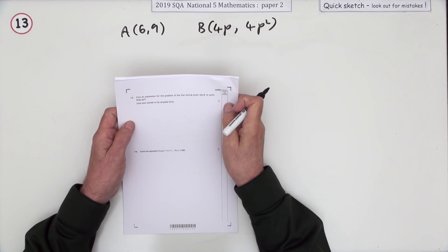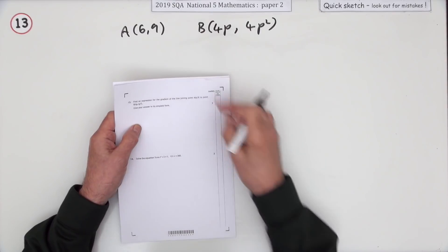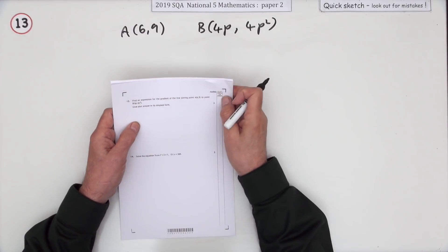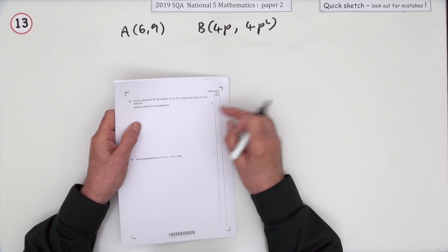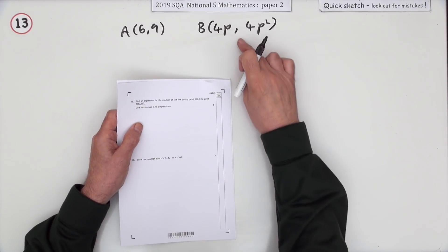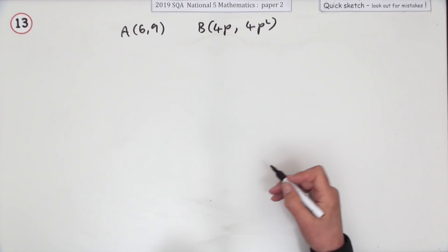Number 13 from paper 2 of the 2019 National 5 - another 3-mark question about gradients. You're given the coordinates of two points and you find the gradient of the line joining them. The only difference is that rather than a numerical answer, you get an expression because there's this unknown p. It says give your answer in its simplest form.